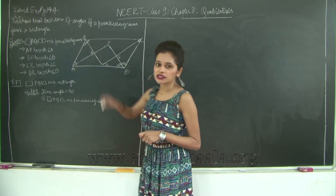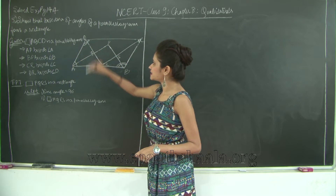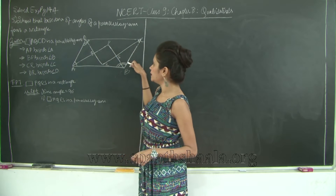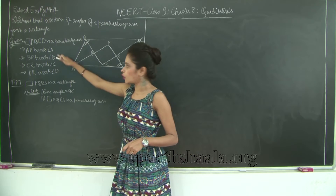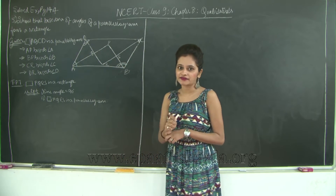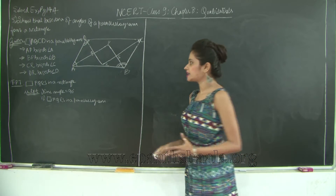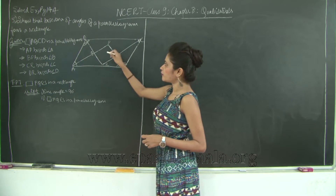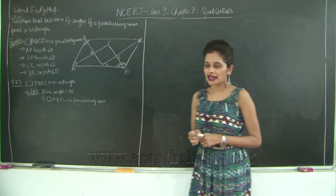We are bisecting all the angles. AP bisects angle A, BP bisects angle B, CR bisects angle C, and DR bisects angle D. So ABCD is our parallelogram with these respective angle bisectors at A, B, C, and D. What we need to prove is that the quadrilateral formed by these angle bisectors — that is, PQRS — forms a rectangle.